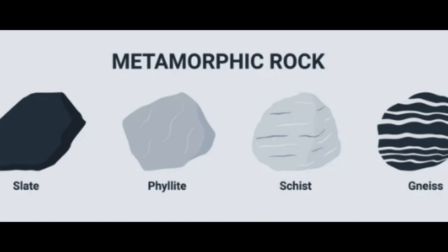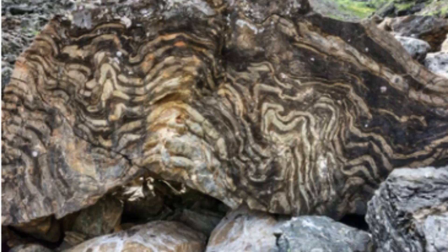Gneiss is a high-grade metamorphic rock that is formed from granite or diorite. The minerals in gneiss are typically quartz, feldspar, mica, and amphibole. Gneiss has a distinct banding that is a result of the segregation of different minerals during metamorphism. The bands can range in thickness from millimeters to several meters.